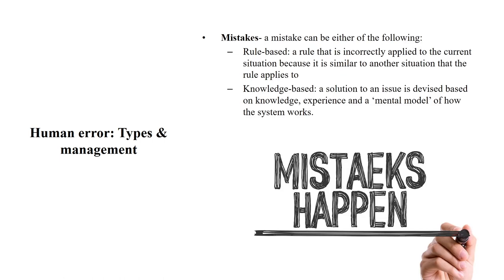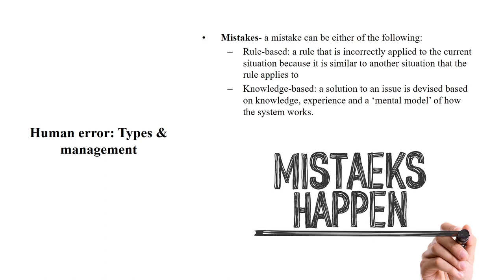The third type is mistake. A mistake can be either a rule-based mistake or a knowledge-based mistake. A rule-based mistake is when a rule is incorrectly applied to the current situation — you know the rule, but you applied it incorrectly because the situation is very similar to another and you mapped it wrongly. A knowledge-based mistake is when a solution to an issue is devised based on knowledge, experience, and a mental model of how the system works — you process it based on your own experience, understanding, and previous memory, and there may be a mistake.